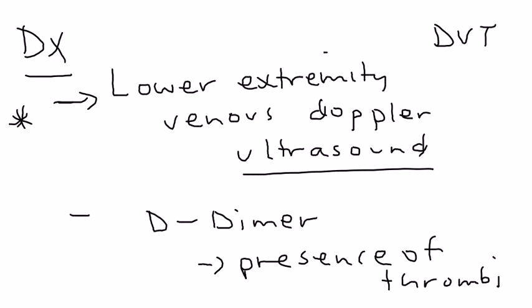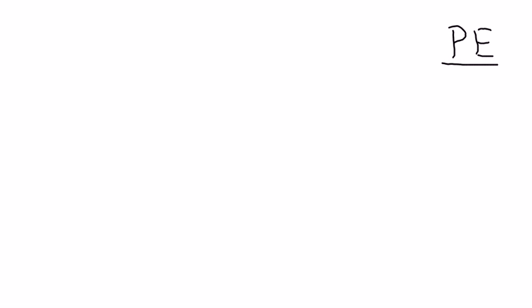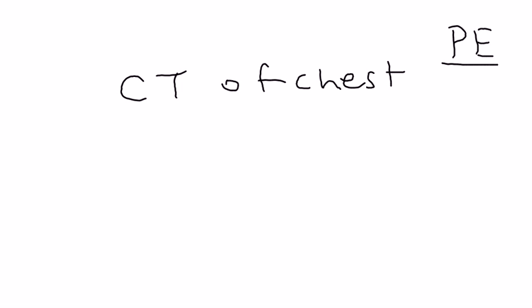If you are suspicious that the patient has a pulmonary embolism, you need to order a CT of the chest — specifically a spiral CT — to show that the blood clot has traveled all the way to the lungs. That is a very serious complication of DVT.